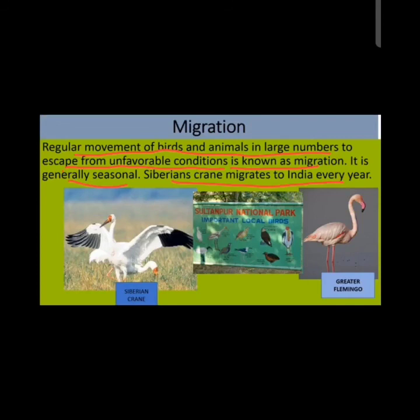There are also migratory fishes. Eels spend their lives in rivers and travel to the sea to lay eggs; when the eggs hatch, the young eels travel back to rivers. Salmon fish live in the sea and travel to rivers to lay eggs, and on hatching, young salmon go back to the sea at the age of two or three years.